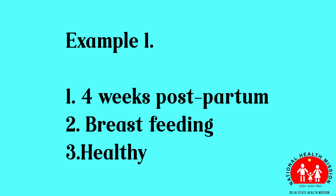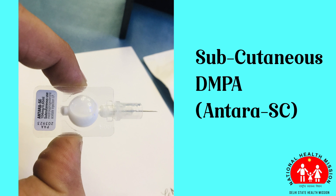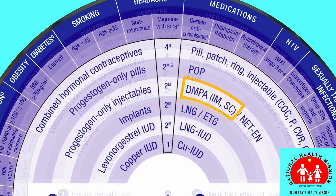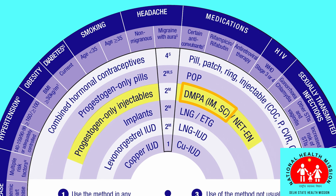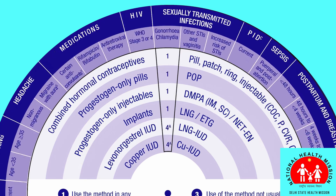In this example, a woman is four weeks postpartum, is breastfeeding, and is healthy. She is going back to work soon so doesn't feel comfortable with the breastfeeding method. She is thinking about the contraceptive subcutaneous injection. Check the MEC wheel — find the injection, also known as DMPA, in the group of progesterone-only injectables, then rotate the wheel to the section on postpartum and breastfeeding.